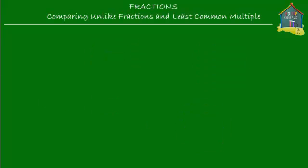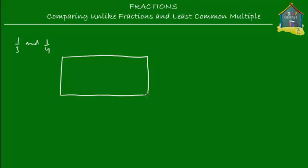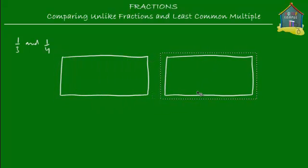Let me take these fractions again — one-third and one-fourth — and put them on lasagnas. Why don't I use lasagnas? Because lasagnas are much easier to cut. So I'm going to use two lasagnas and make an exact same lasagna. I'm going to mark one-third on one of them and one-fourth on the other one.